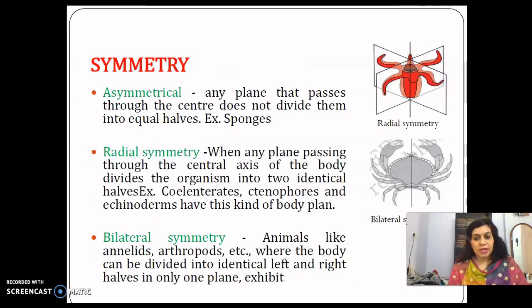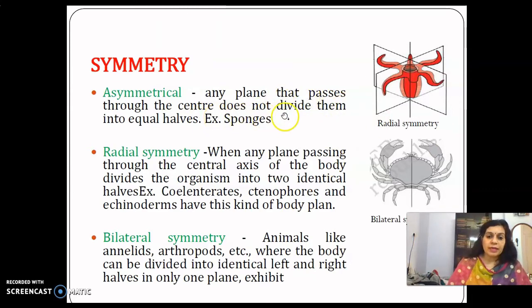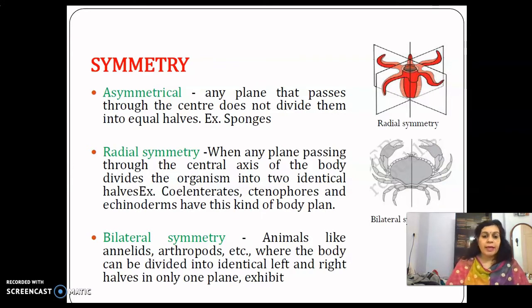Symmetry is another criterion for grouping animals. Animals can be grouped into three types: asymmetrical, radial symmetry, and bilateral symmetry. Asymmetrical animals have no plane that divides the body into two equal halves — sponges are an example. In radial symmetry, any plane passing through the central axis divides the organism into two identical halves. Examples of radially symmetrical animals include Cnidarians, Ctenophores, and Echinoderms.